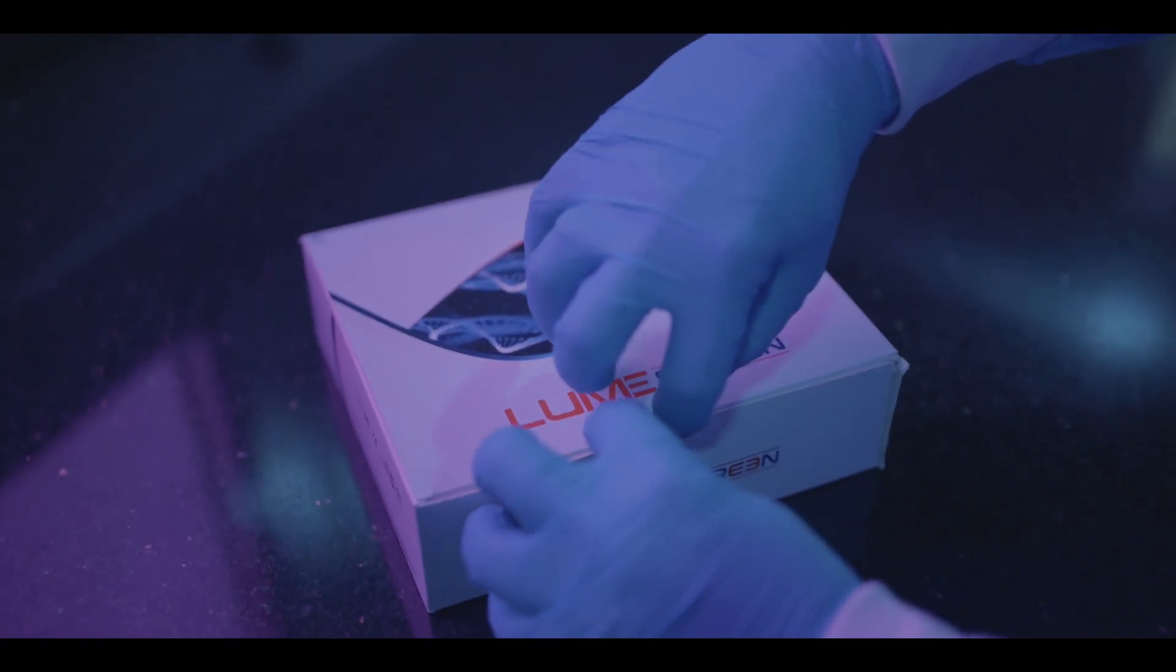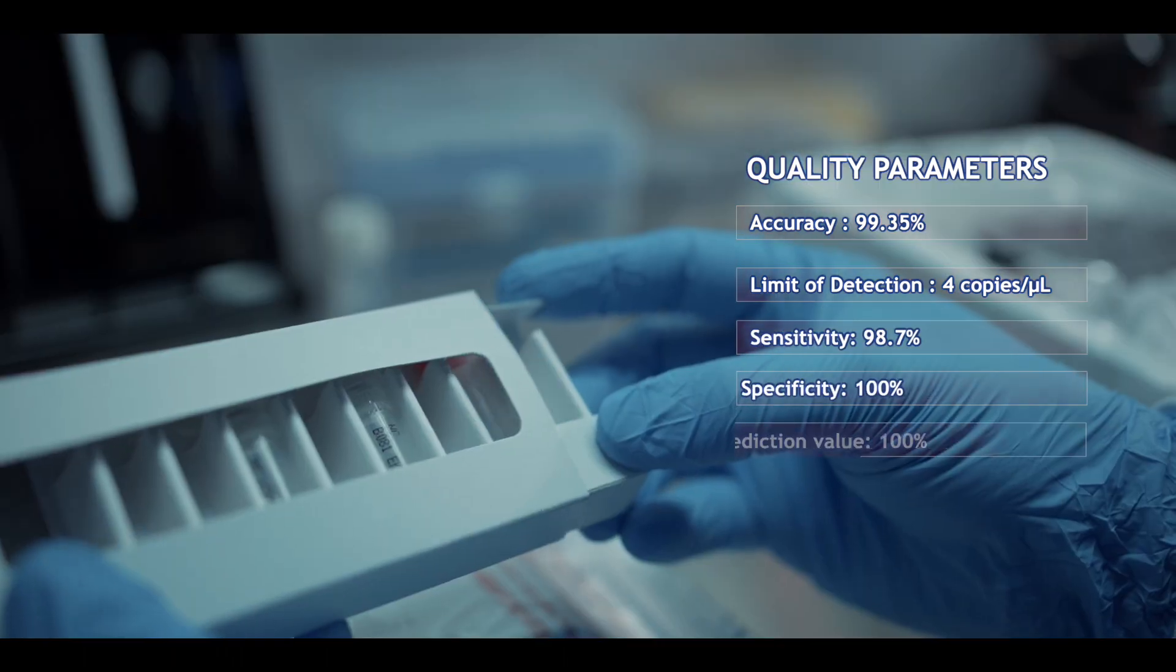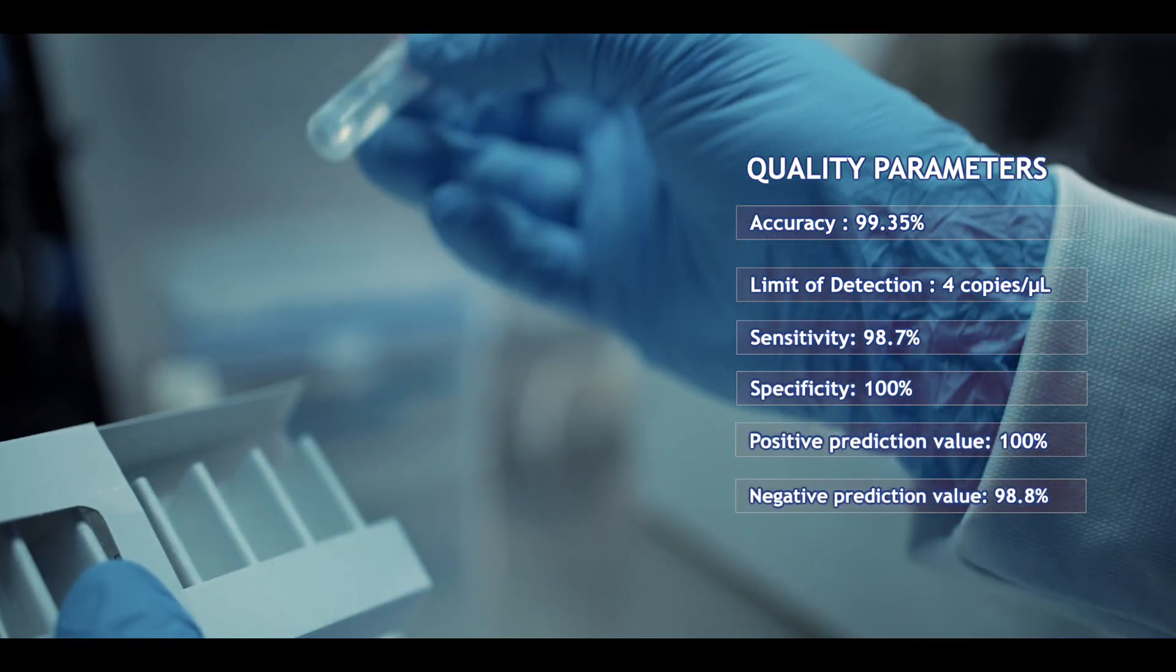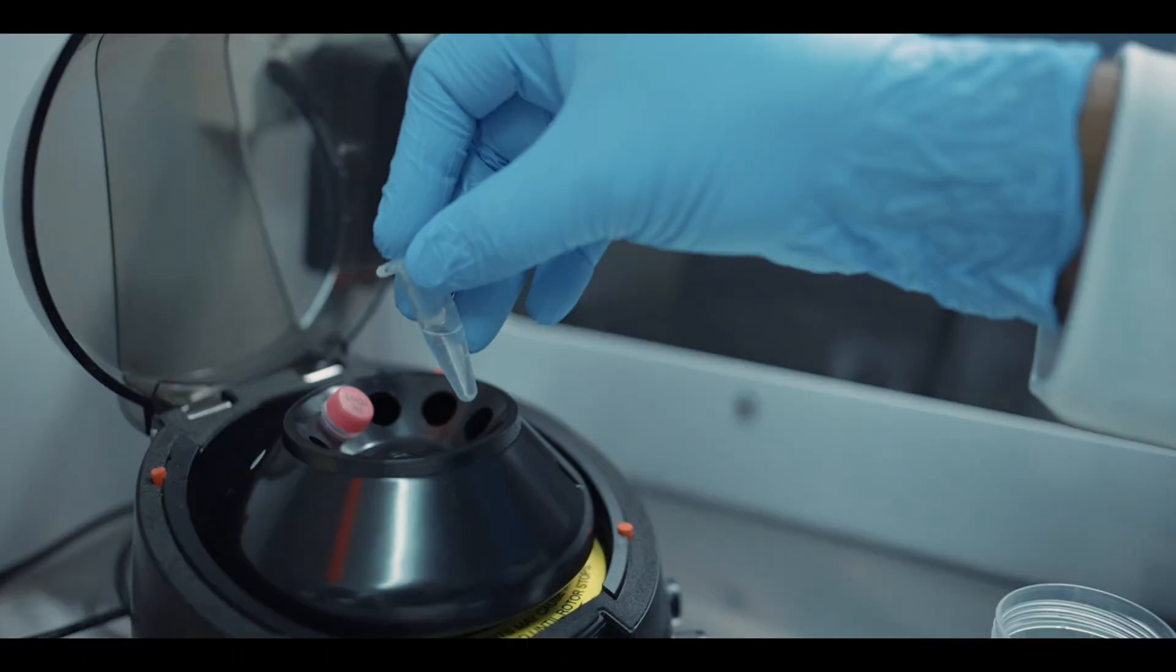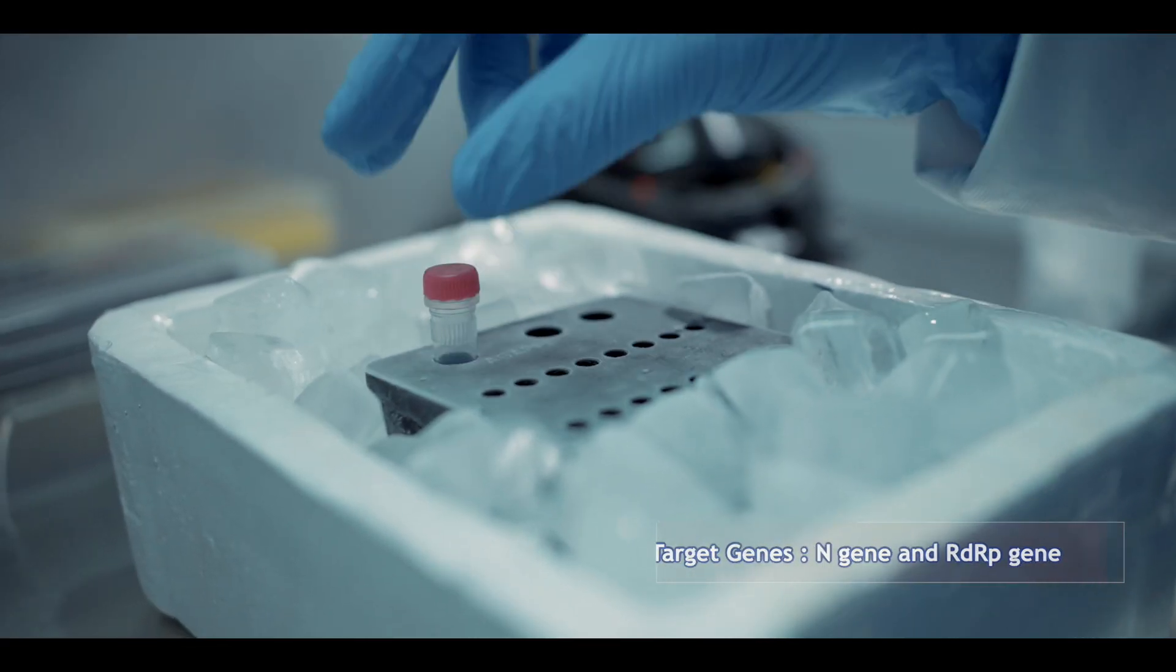With a very high accuracy of 99.35%, LoomScreen guides the medical fraternity better in COVID diagnosis. Primers are designed by targeting N genes and RDRP gene respectively.